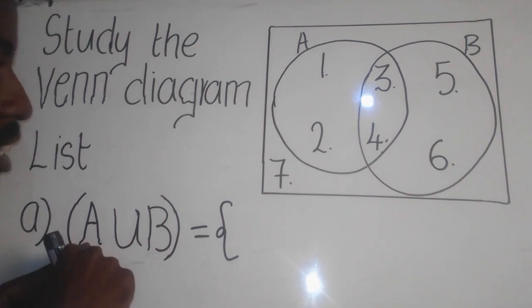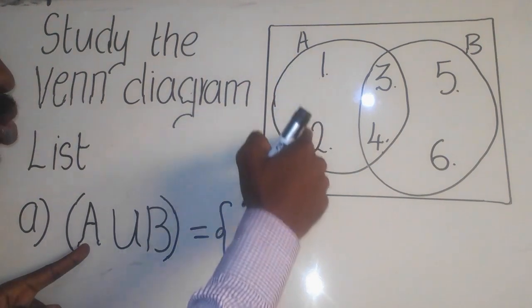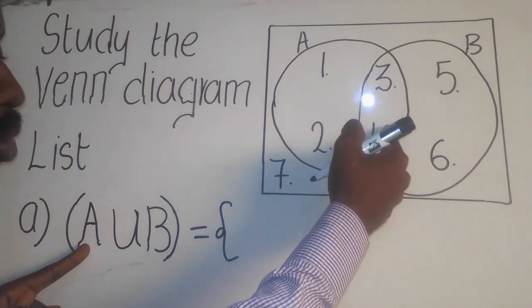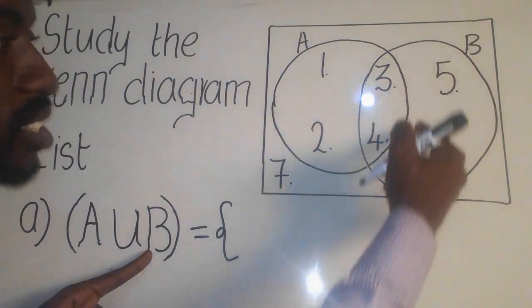Now, let's check where is set A? It is this one. So set A, we have 1, 2, 3, 4, okay? Set B, we have 3, 4, 5, 6.